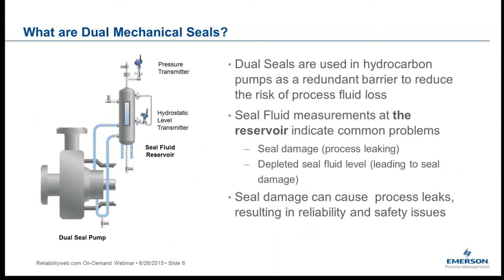Dual mechanical seals were developed to reduce the risk of process fluid loss. With a single mechanical seal, if the seal fails you have a release of process fluid — and in refining and petrochemical plants, the process fluid is always either flammable, toxic, or sometimes both. In Plan 52 the fluid is called a buffer fluid; in Plan 53, where it's pressurized, it's called a barrier fluid. Either way, the function is to provide lubrication and cooling to the mechanical seal faces, because loss of this flush fluid leads to rapid seal damage and failure.